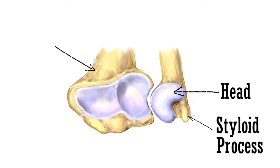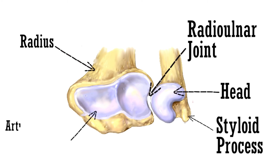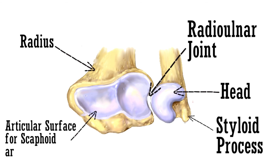This is the radius bone, and this is the articulation of the articular circumference of the head of ulna with the ulnar notch to form the radio-ulnar joint. Lastly, this is the articular surface for the scaphoid and lunate bones.